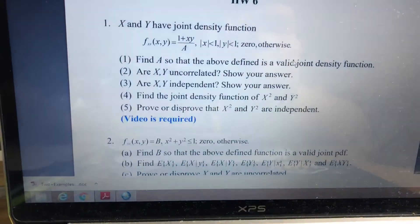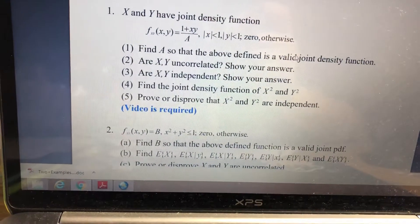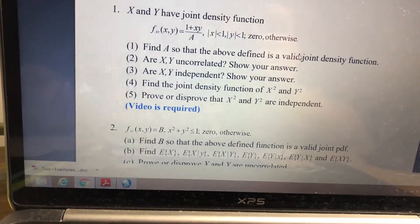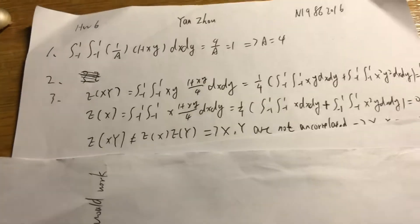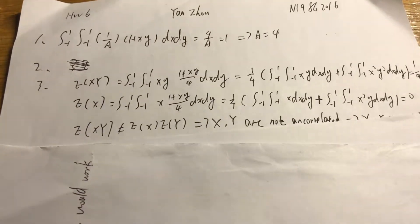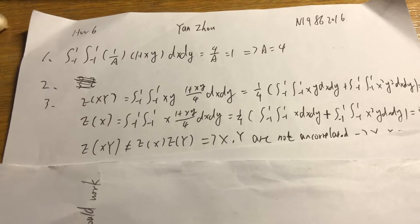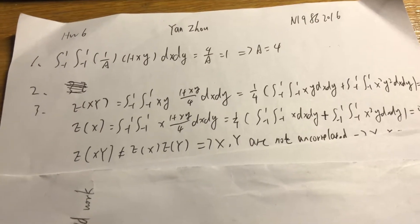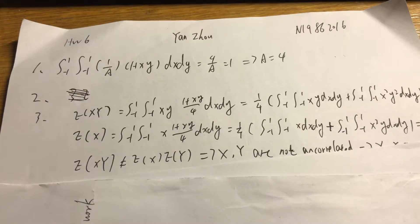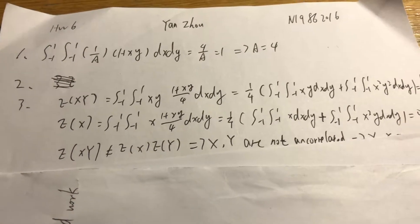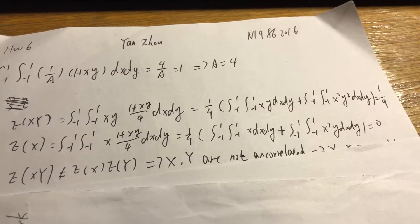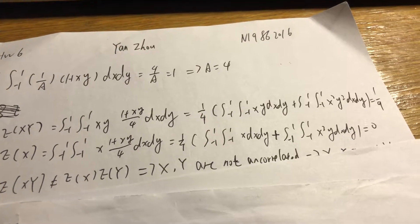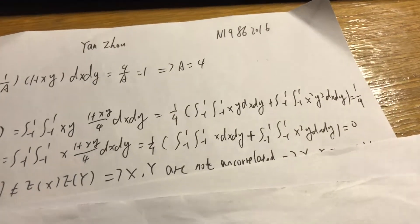Parts 2 and 3 ask whether x and y are uncorrelated, and whether x and y are independent. Let's do these two together. We compute E[XY], which uses the same setup as before: x and y ranging from -1 to 1, and the density (1 plus xy) over 4 dx dy. We get (1 over 4) times the integral of (1 plus xy) dx dy plus the integral of x squared y squared dx dy.